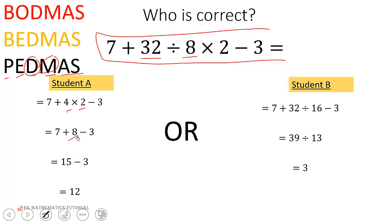After that, he added 7 and 8 to get 15 for the addition step, then subtracted 3 to get 12.